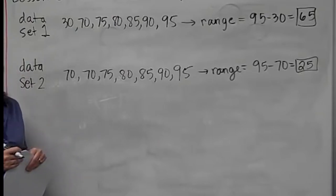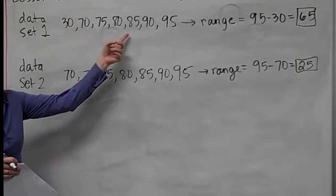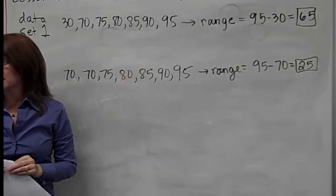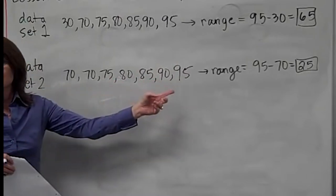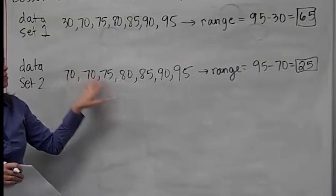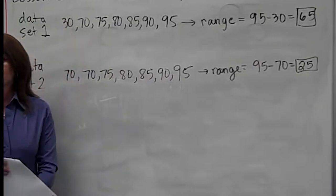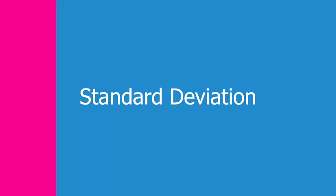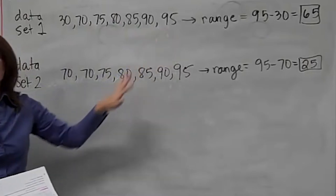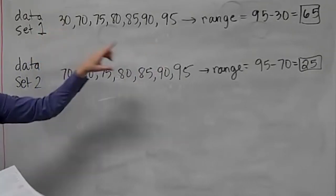You'd like data set two because the numbers are higher in general. Everything is the same except that first lowest number. If you had a range of 65 points on a test, that's pretty significant. On data set two, there's only a range of 25 points from the highest to the lowest grade. A smaller range indicates better consistency — the bigger range suggests there was a bad day or one student who struggled, while everybody else was more consistent.